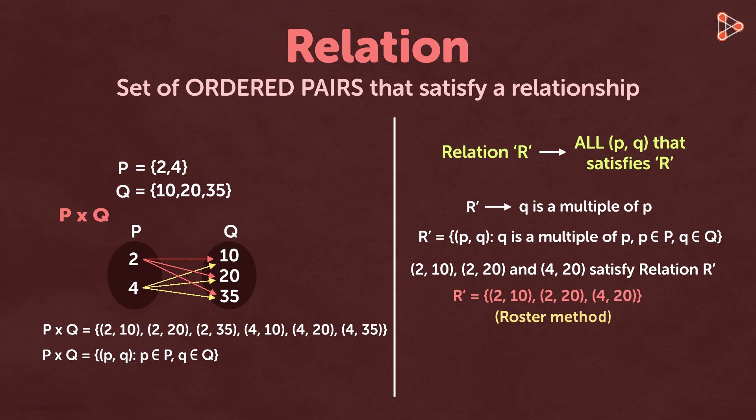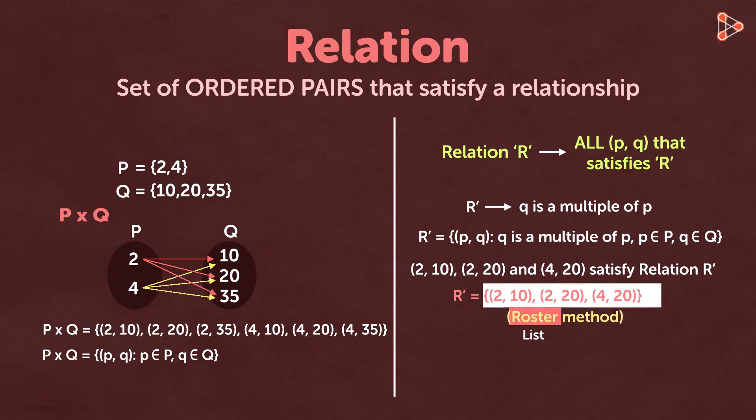This is the roster method to represent set R dash. Roster means list. So we can say that the ordered pairs in set R dash are all listed like in a roster.